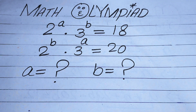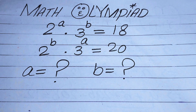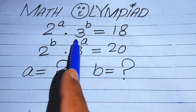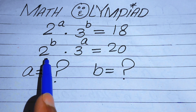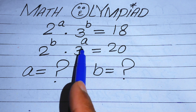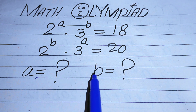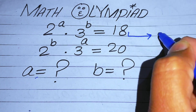Hello everyone, welcome back to the Map of Mathematics. In this video we are going to solve this nice math algebraic challenge. We have 2 to the power of a multiplied by 3 to the power of b equals 18, and 2 to the power of b multiplied by 3 to the power of a equals 20. We need to find the values of a and b.